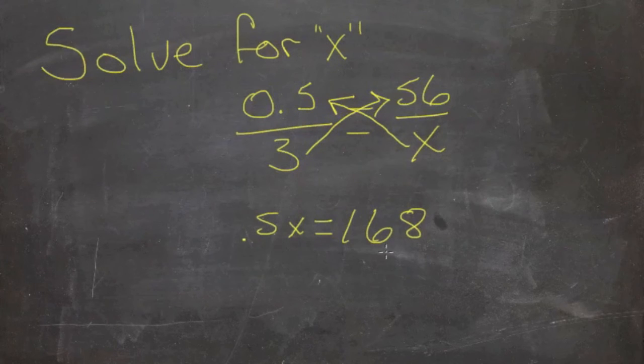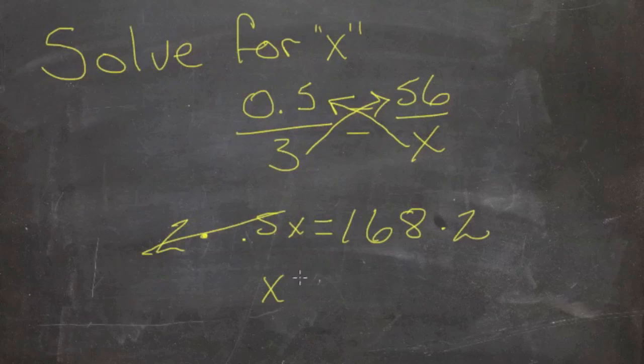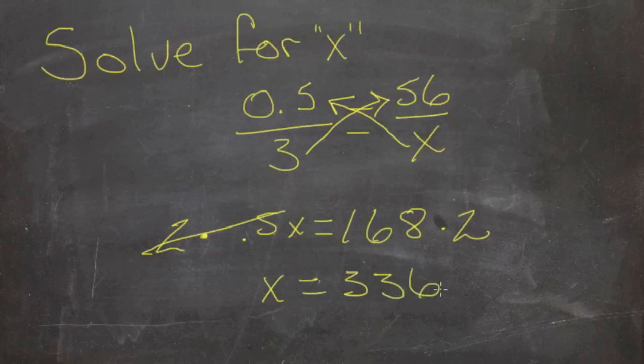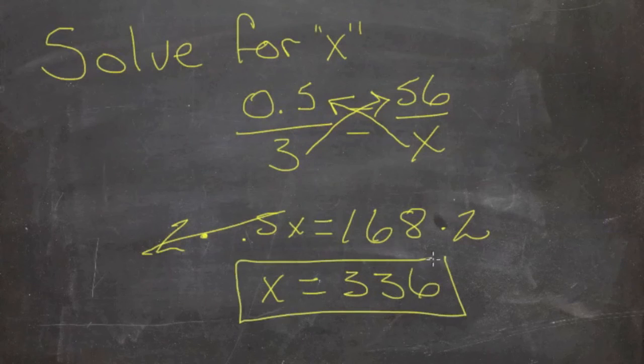There's two ways to do it. Either we can divide both sides by a half, in which case we'd have to invert that half and multiply it, so we'd end up multiplying by 2. Or we can just multiply both sides by 2, since we have half of x and we need the whole x. So let's just do it that way. Let's multiply 2 times both sides. 2 times a half is 1. That gives us 1x. 168 times 2 is 336. So x equals 336.